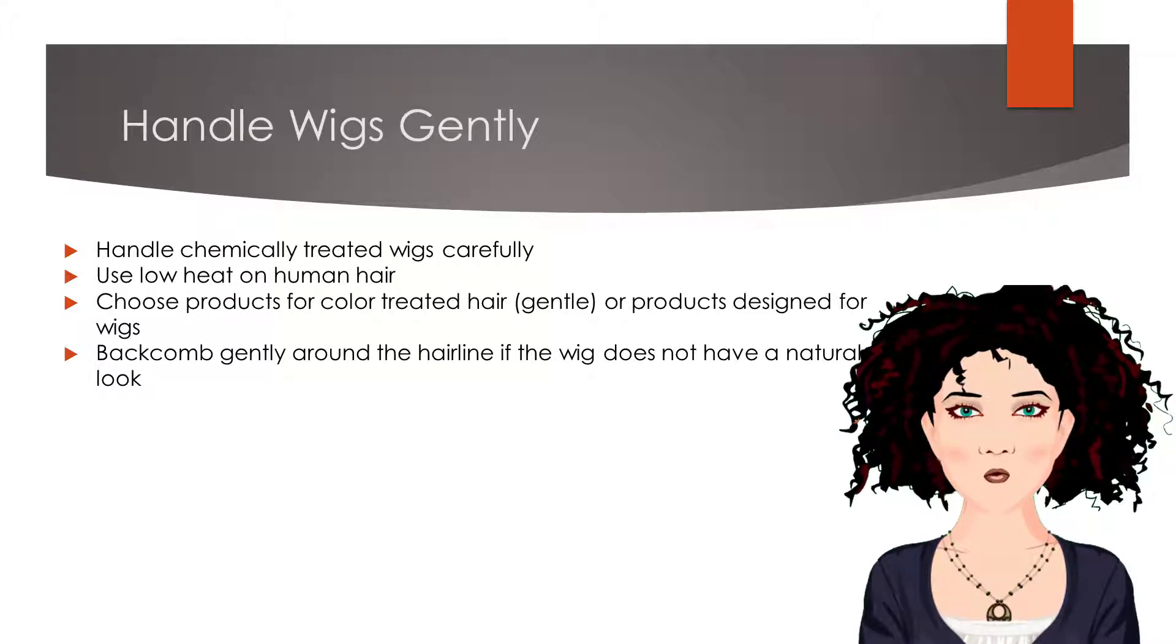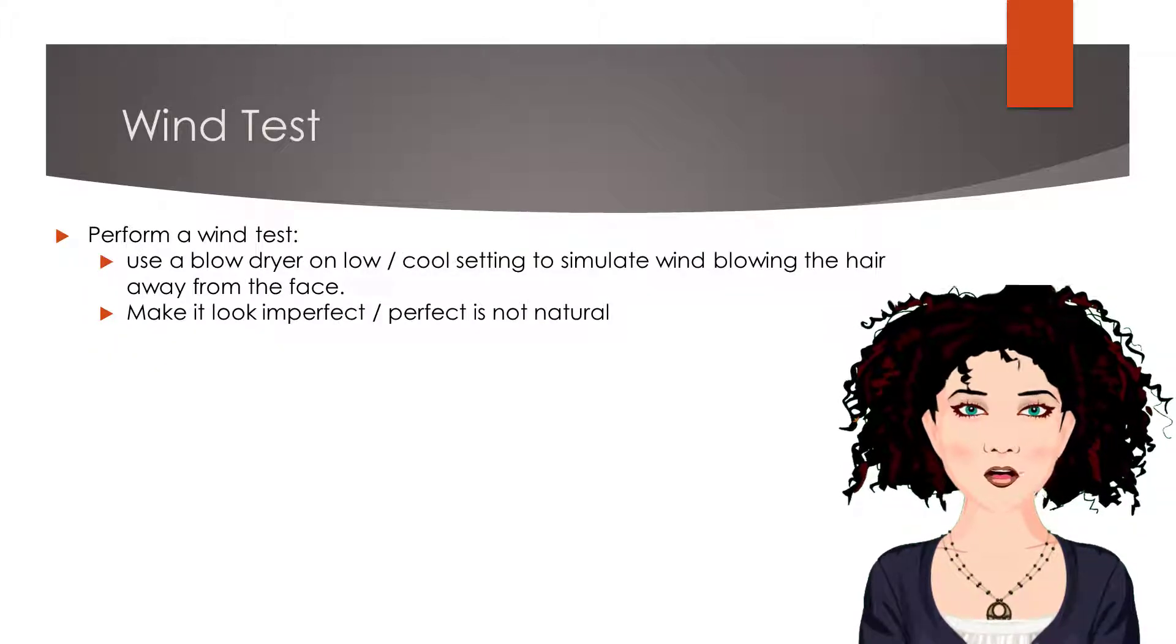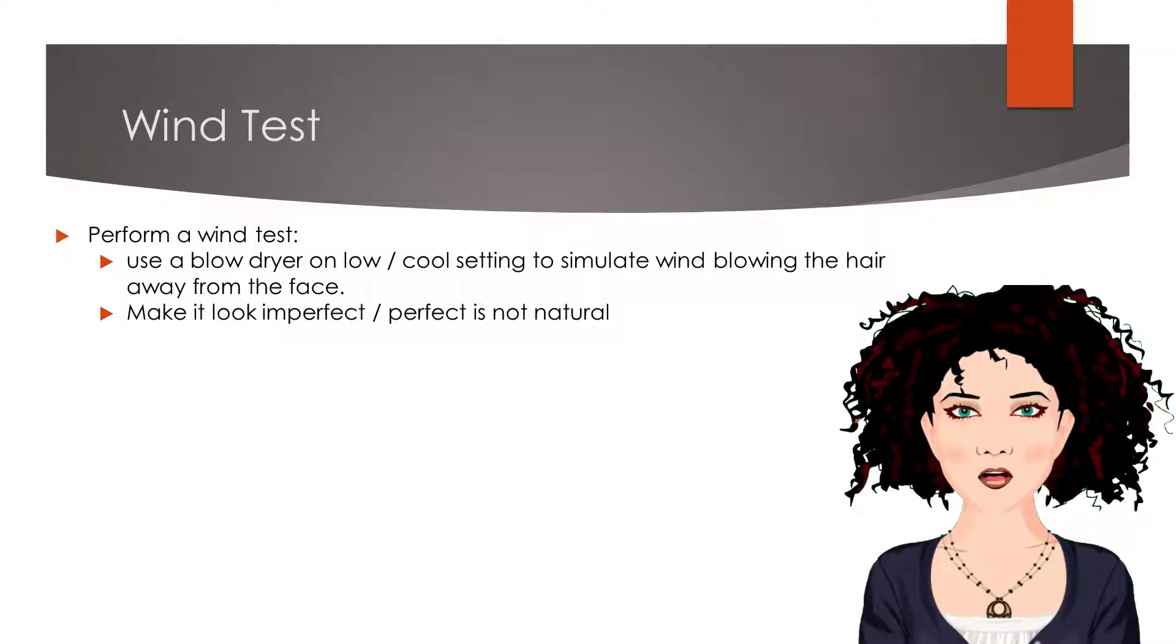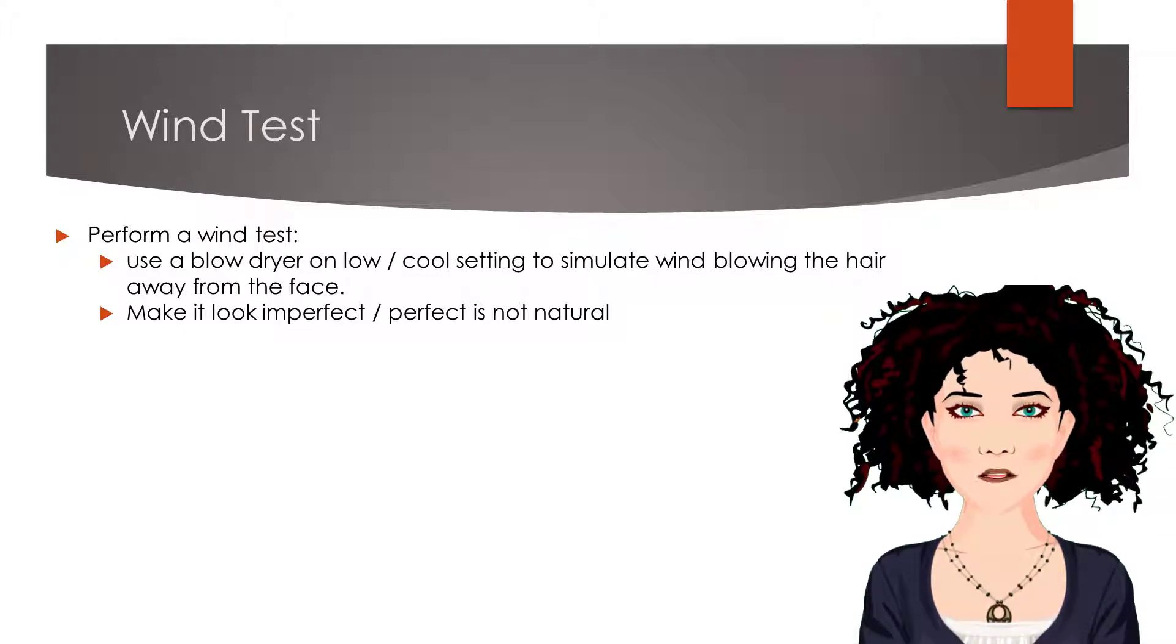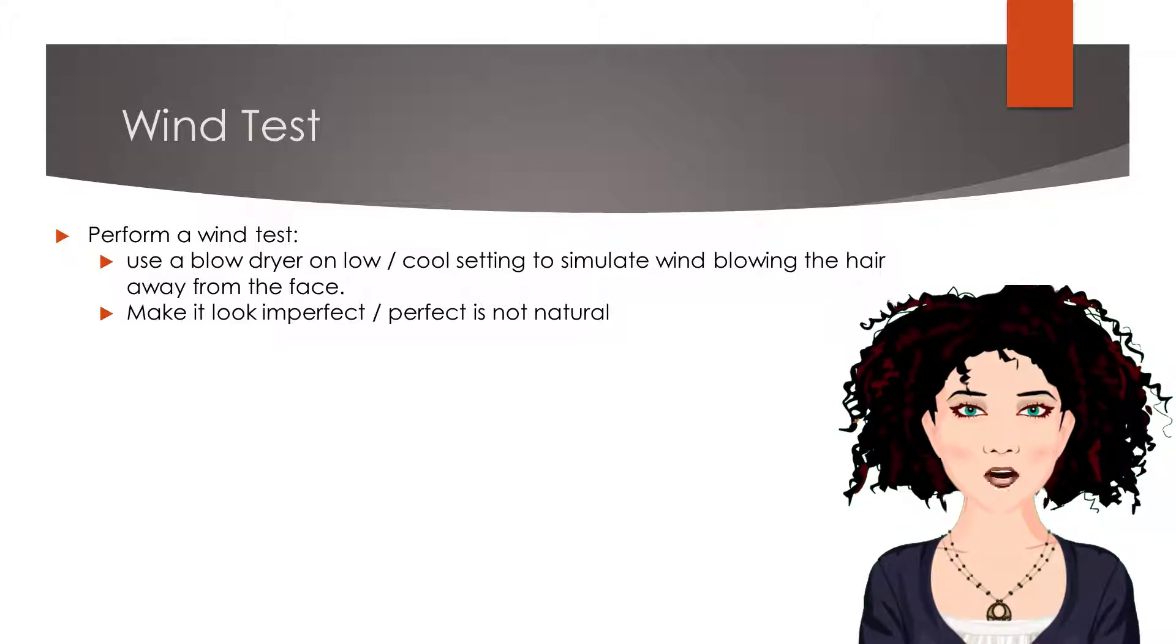Backcomb gently around the hairline if the wig does not have a natural look. A wind test is a quick test to determine how realistic a wig looks on a client. To perform a wind test, use a blow dryer on low-speed and cool temperature settings to simulate wind blowing the hair away from the face. Observe the movement of the hair.